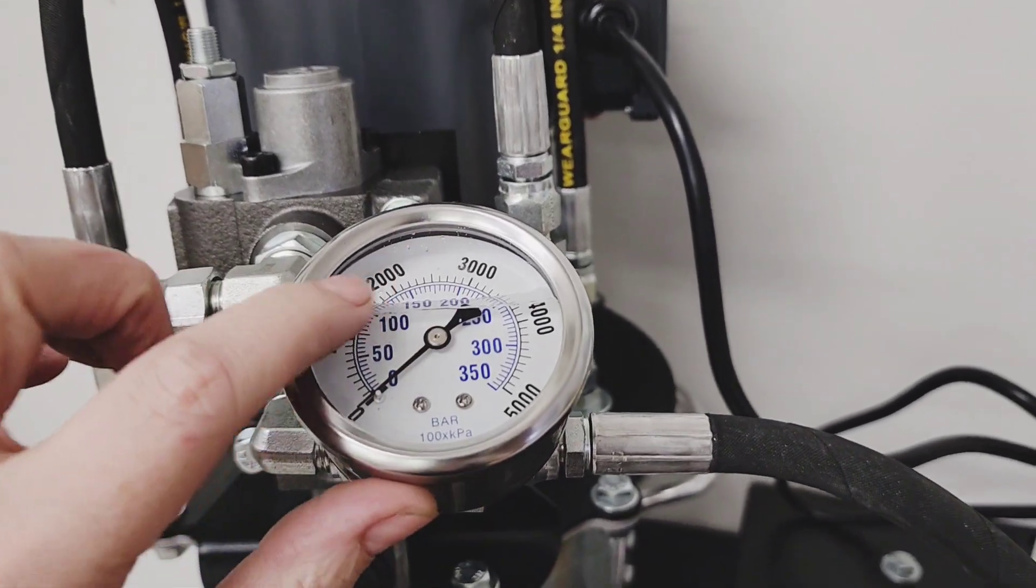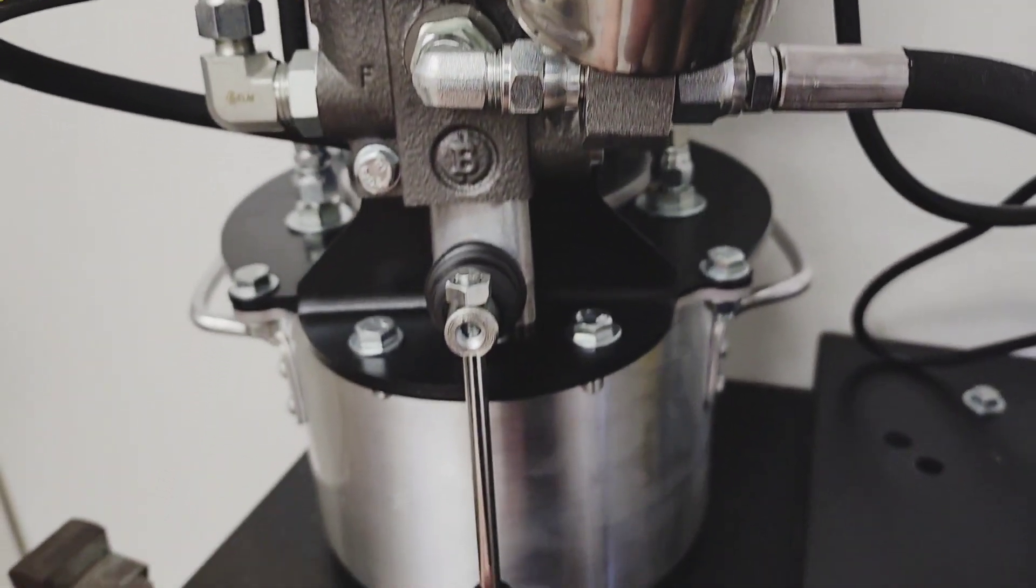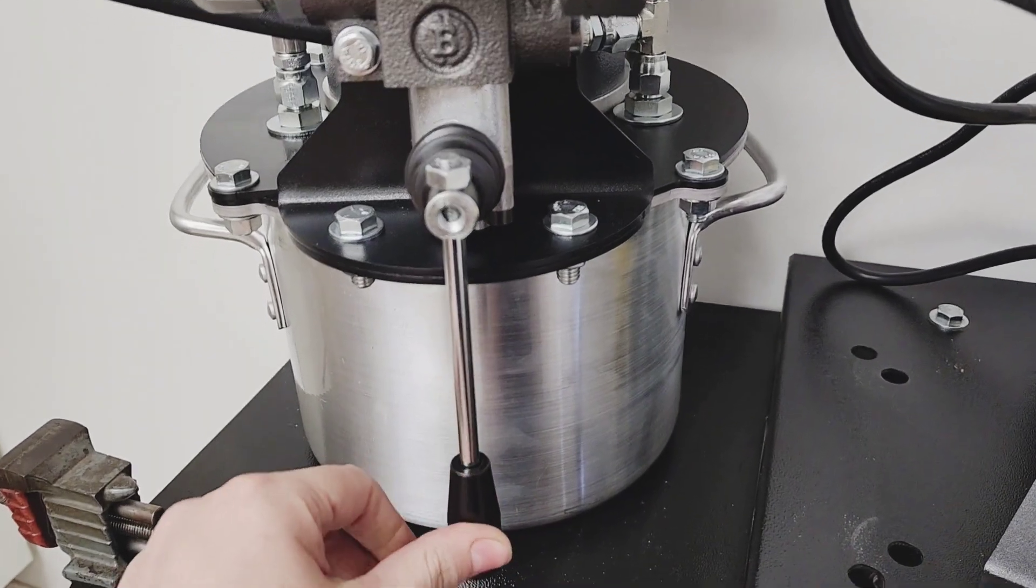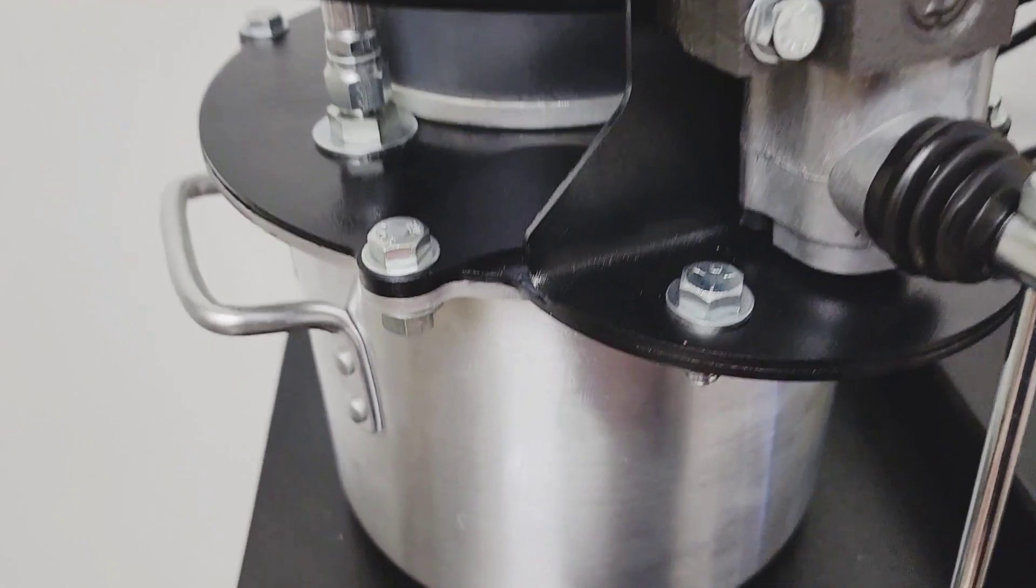There is the pressure gauge, and it may have a bubble in it. It does have fluid in it; that's completely normal. And there's the handle. Pulling it towards you lowers the lower platen, and pushing it away from you raises the lower platen.